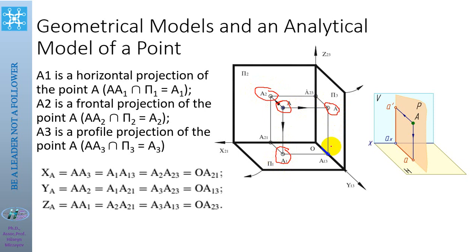For the projection method, we take projection rays which are perpendicular to the projection plane. P1 is the horizontal plane, and the projection rays are perpendicular to it. P2 is the frontal plane, and line A2 is perpendicular to the frontal plane. P3 is the profile plane, and line A3 is perpendicular to the profile plane.